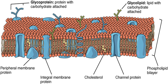Membranes in cells typically define enclosed spaces or compartments in which cells may maintain a chemical or biochemical environment that differs from the outside. For example, the membrane around peroxisomes shields the rest of the cell from peroxides — chemicals that can be toxic to the cell — and the cell membrane separates a cell from its surrounding medium. Peroxisomes are one form of vacuole found in the cell that contain by-products of chemical reactions. Most organelles are defined by such membranes and are called membrane-bound organelles.